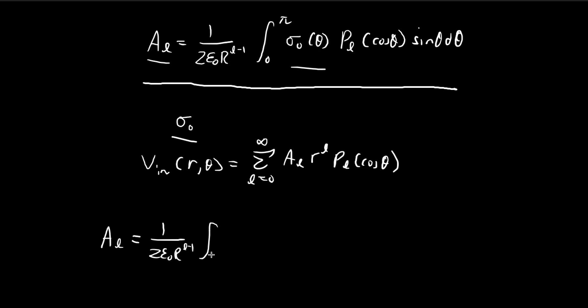So a_l is given by this expression, and this time it's a constant. And then just like in the previous section, we can express this in terms of our Legendre polynomial.